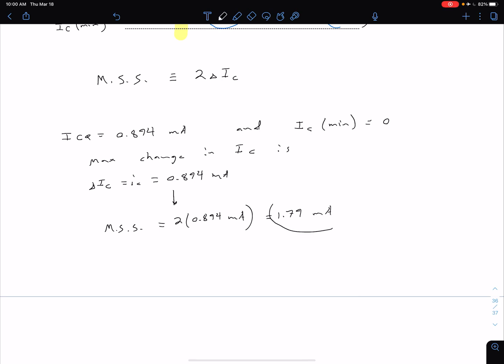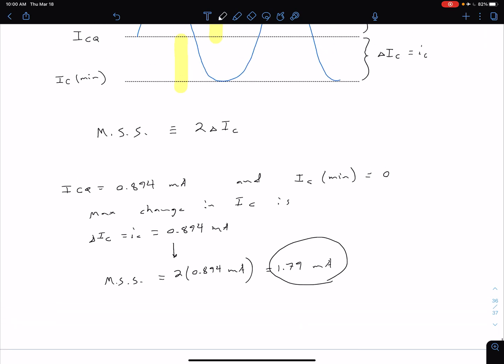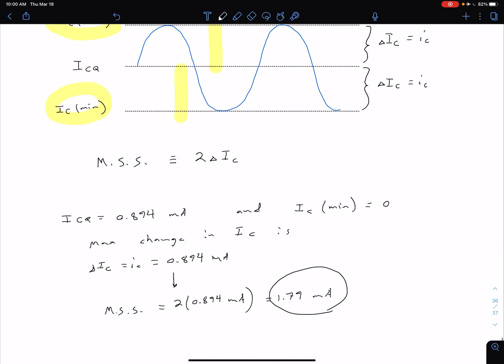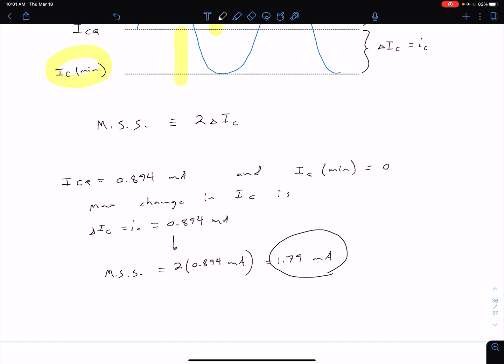In this case, we're assuming that this 1.79 is not driving the device into saturation. Oftentimes you'll have one of these two values being the limiting factor, and it's not necessarily both limiting it at the same time. In this quick rough example, we've said our IC min is the point that we need to stay above, and we're assuming that the IC max is not an issue.